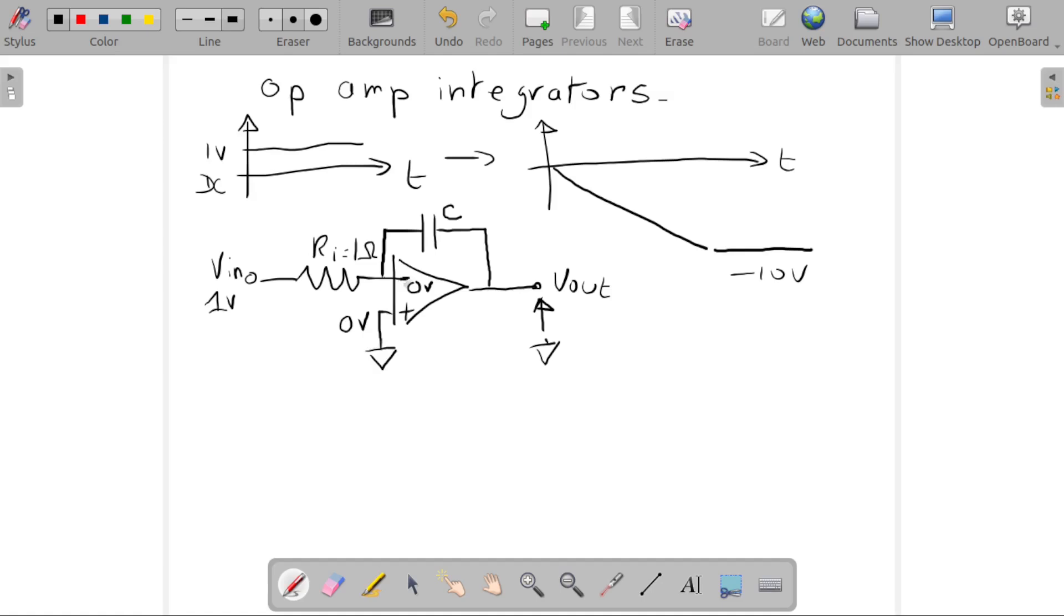This is the concept of virtual ground. This is all due to the fact that the op amp has a very large input impedance, so basically there's no current going in here.